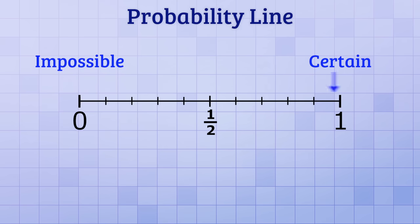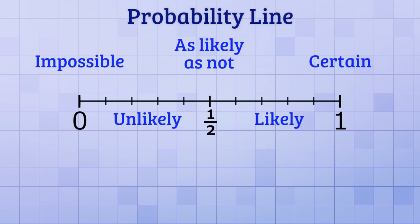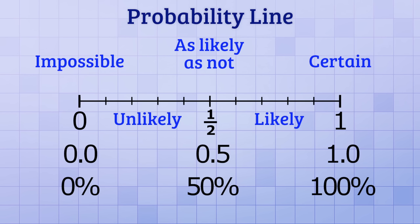A probability of 1 half, like with our coin toss, means that an event is just as likely to happen as it is to not happen. A probability less than 1 half means that an event is unlikely, and a probability greater than 1 half means that an event is likely. And in addition to fractions, it's also common to write probabilities as decimals or percentages, since you can easily convert between those three. A probability of 0 is the same as a 0% chance of something happening. A probability of 1 half is the same as a 50% chance of something happening. And a probability of 1 is the same as a 100% chance of something happening.